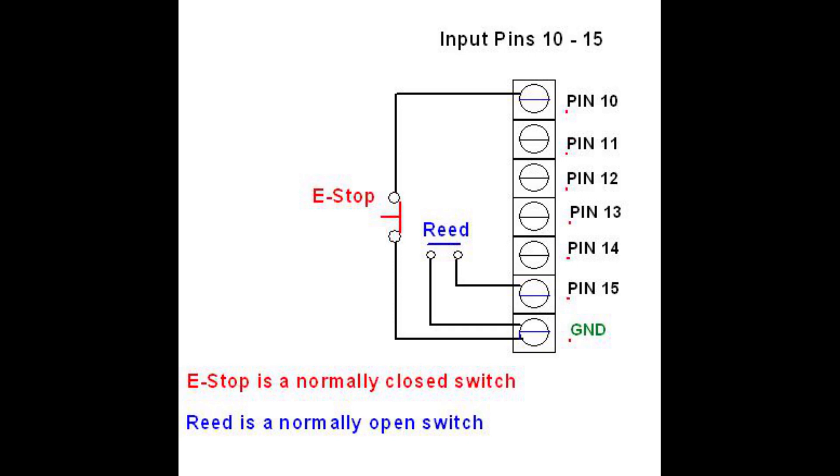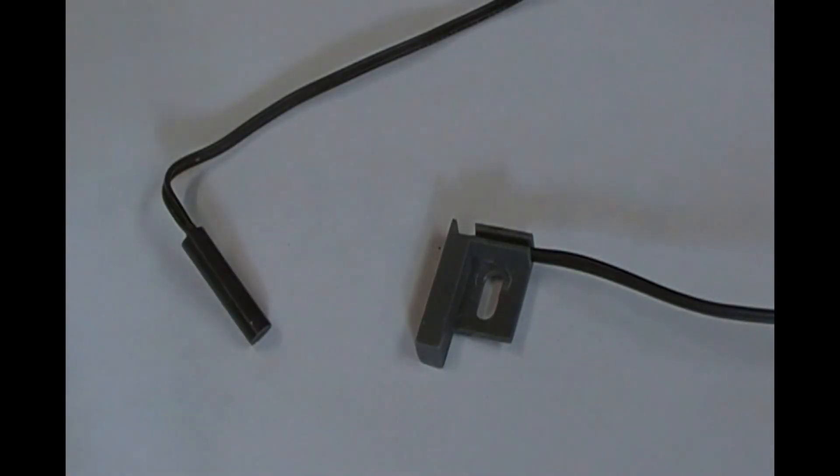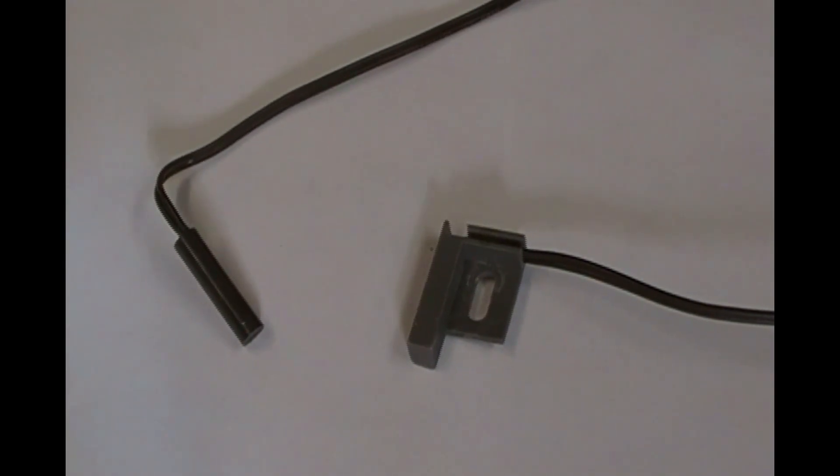When the spindle's magnet passes across the face of a reed sensor, its contacts close, allowing the computer's input pin to change from high to low. Reed sensors are readily available and inexpensive. They can also be salvaged from treadmills.